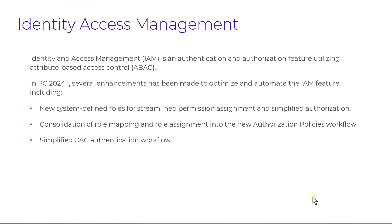Identity and Access Management is an authentication and authorization feature utilizing attribute-based access control. Beginning with Prism Central 2024.1, several enhancements have been introduced to optimize and automate the IAM feature, including new system-defined roles to streamline permission assignments with granular RBAC, making the authorization process more straightforward, and integration of role mapping and role assignment into a newly designed authorization policies workflow, as well as a simplified workflow for CAC authentication.